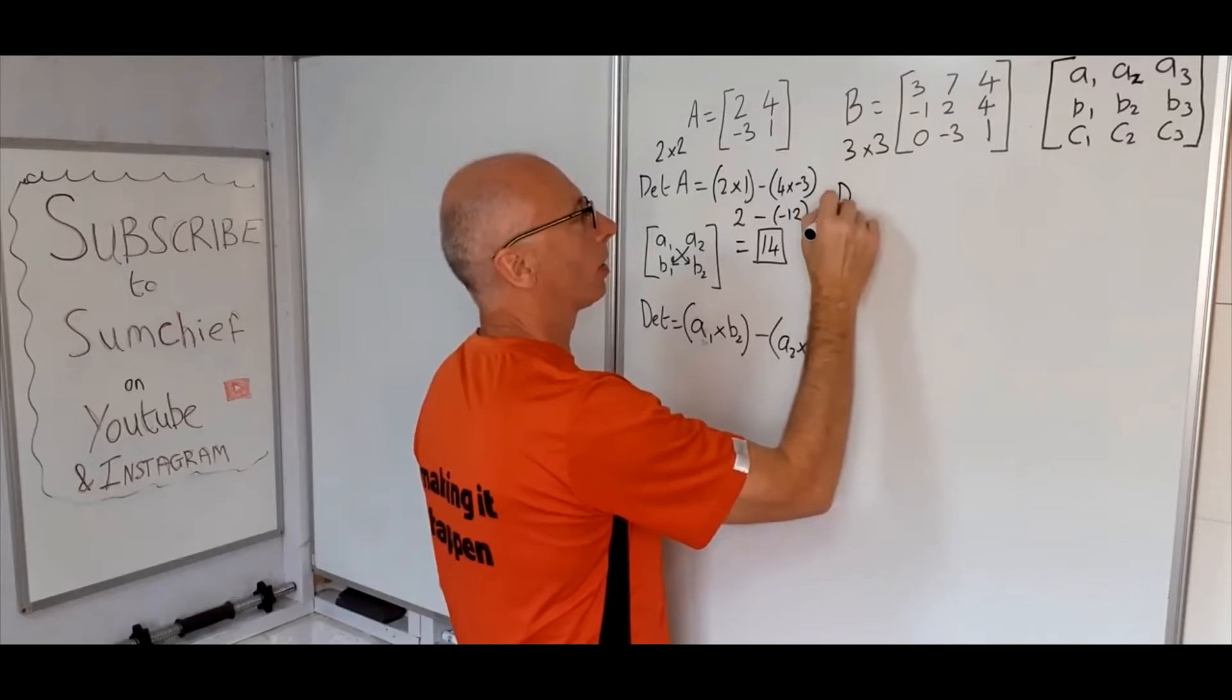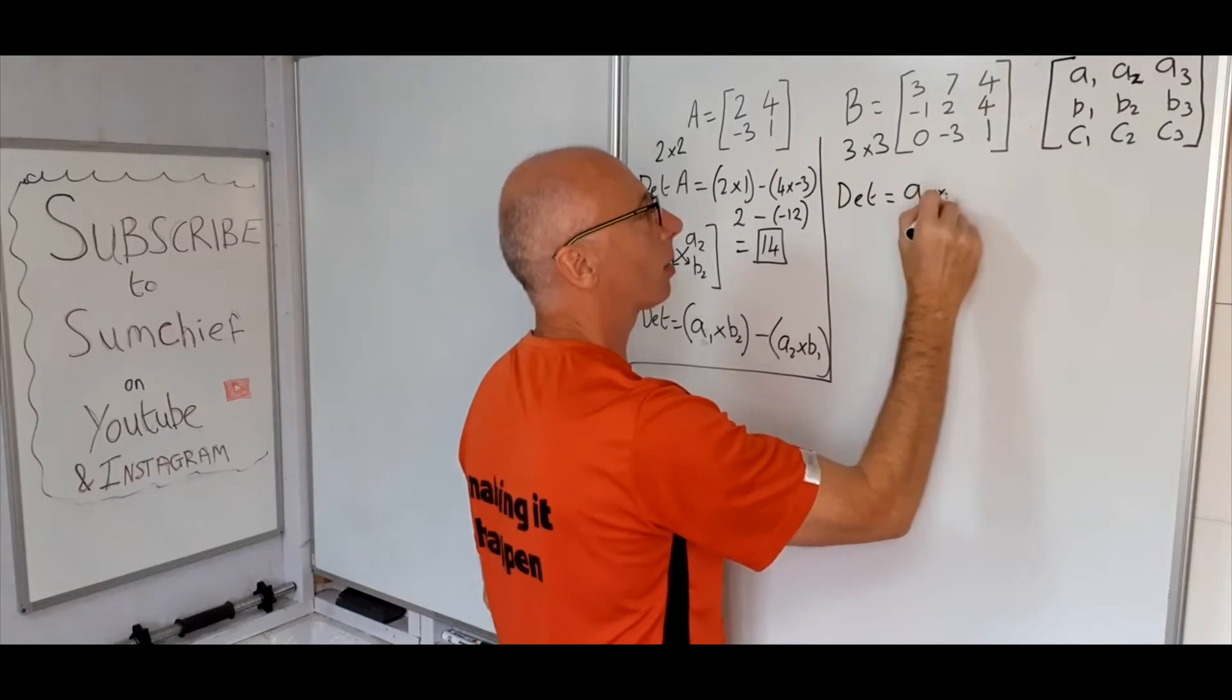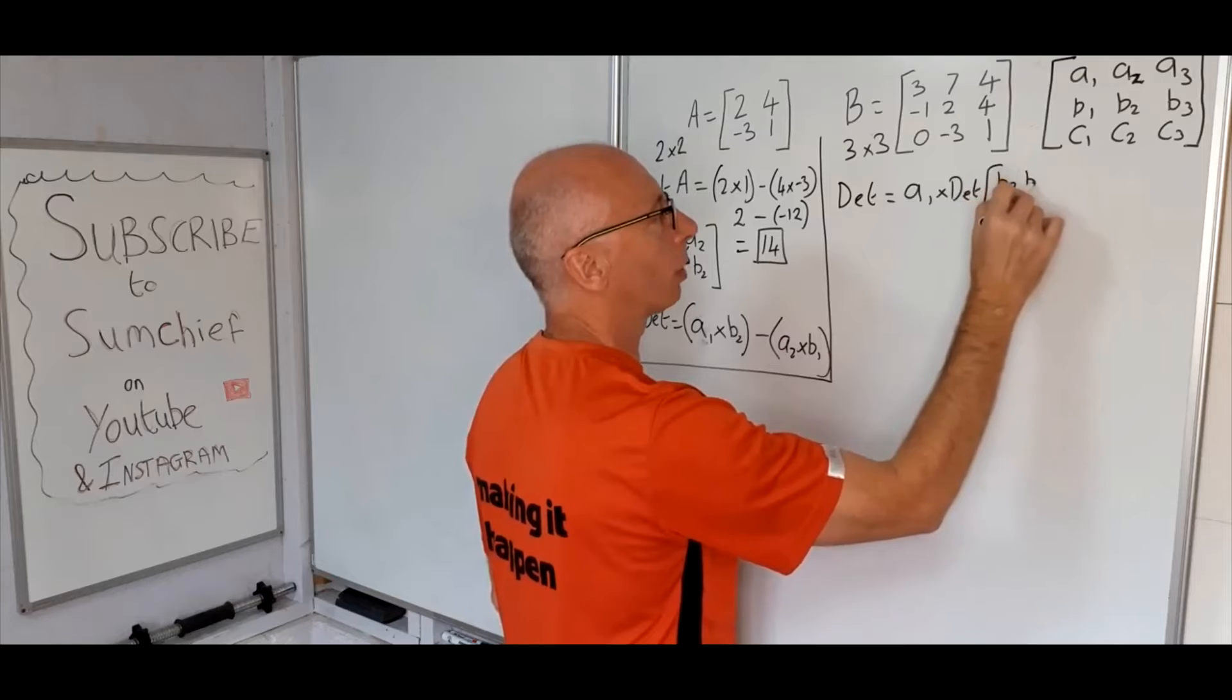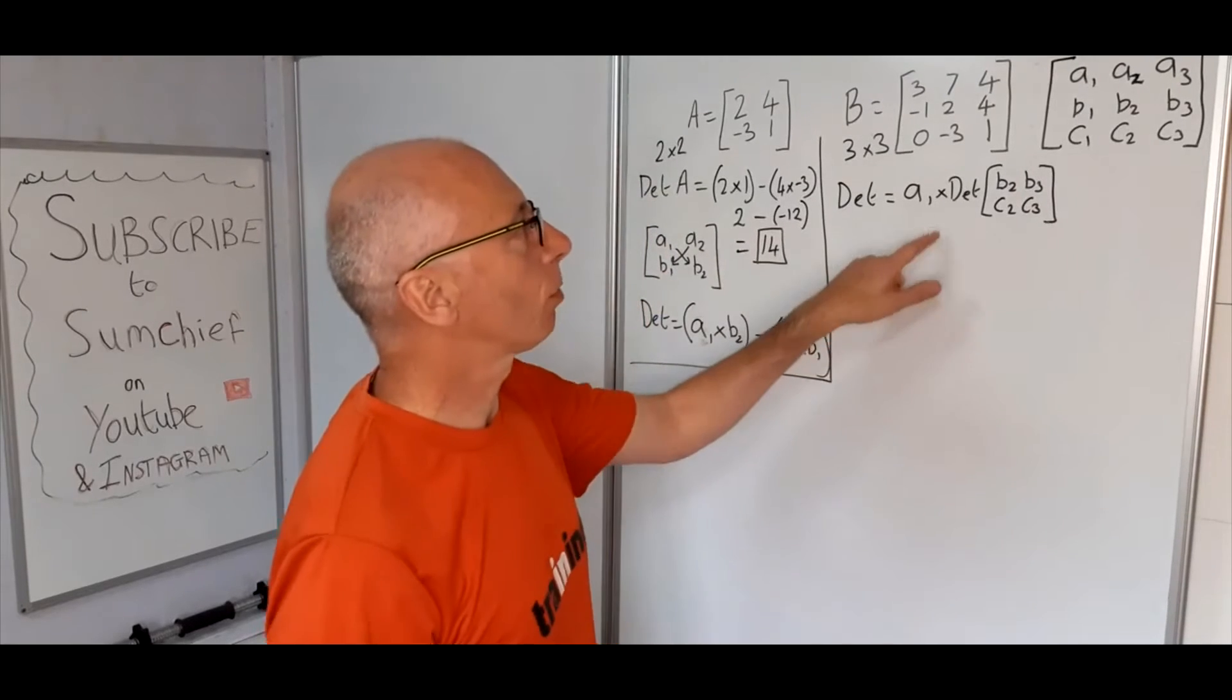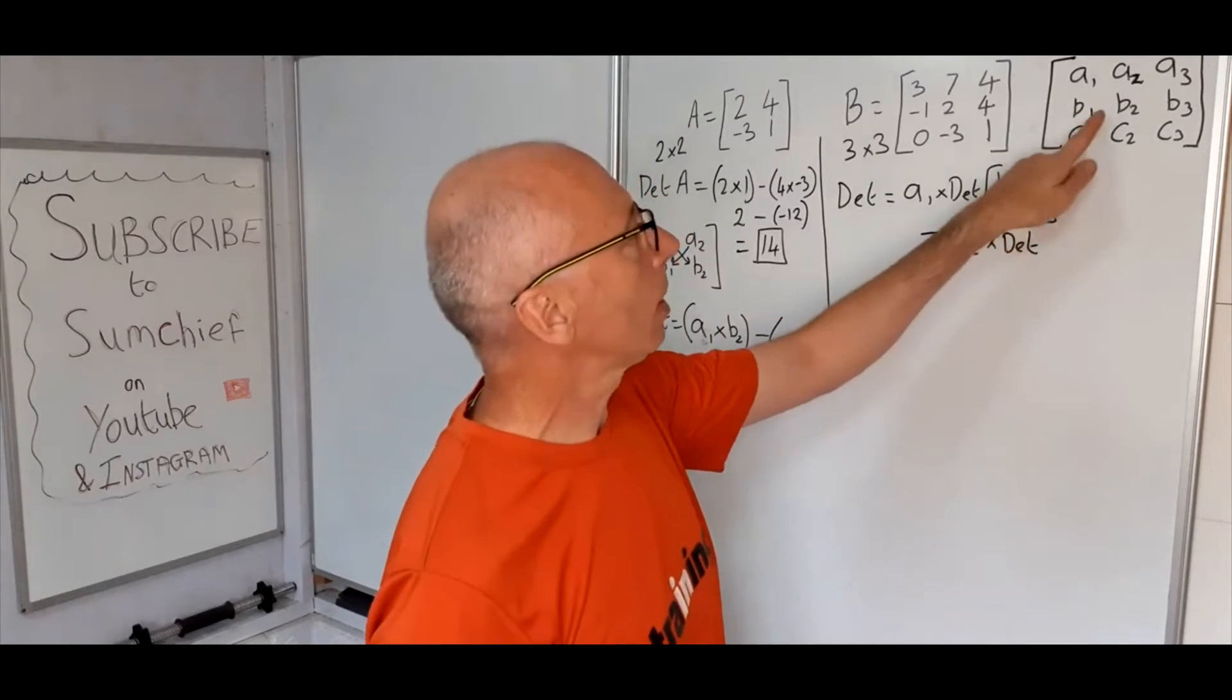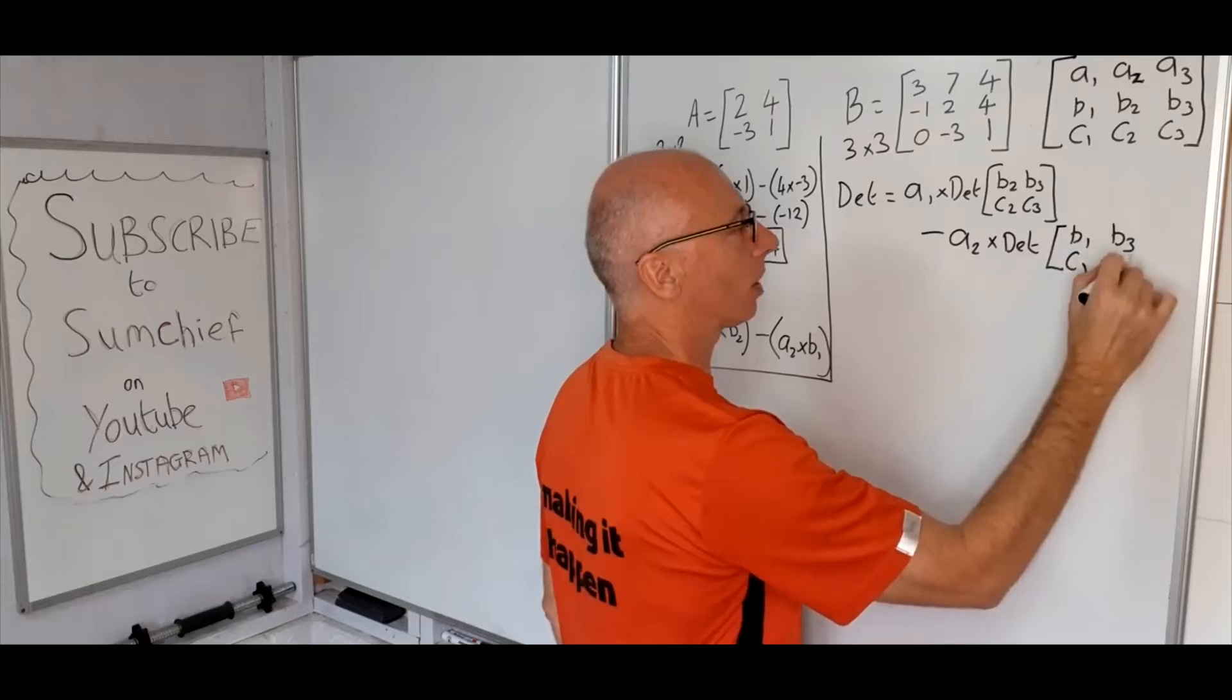So let's just write that down. So determinant, let's just put a line down here, determinant equals, so A1, times, this matrix here, so if I write that down just as determinant for now, B2, B3, C2, C3, okay, and then we subtract, and then we go A2, times determinant, away from these parts here, so it will be B1, B3, C1, C3.